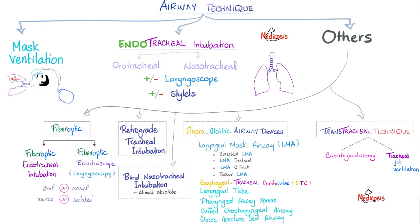Airway technique. First, go with mask ventilation — if you can maintain mask ventilation, this is every anesthesiologist's dream. But unfortunately it is sometimes not enough, so you go to the next step: the tube. The endotracheal tube is introduced through the mouth — called orotracheal — or through the nose, called nasotracheal — and ends up in the trachea. This is how you make the patient breathe artificially during surgery.